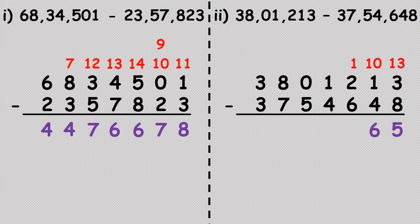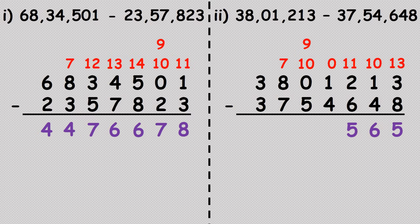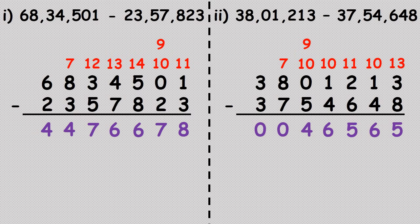One minus six is not possible — borrow from the next digit one, which becomes zero, and one becomes eleven. Eleven minus six is five. We cannot subtract four from zero — the next digit is also zero, so we borrow from eight: eight becomes seven, the zero becomes ten, then ten becomes nine to lend one, and zero becomes ten. Ten minus four is six; nine minus five is four; seven minus seven is zero; three minus three is zero. Final answer: forty-six thousand five hundred and sixty-five.